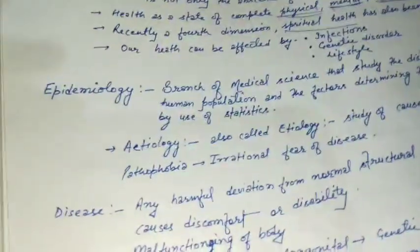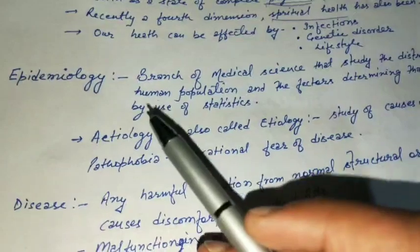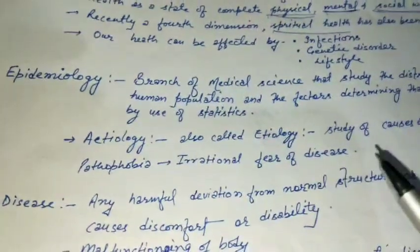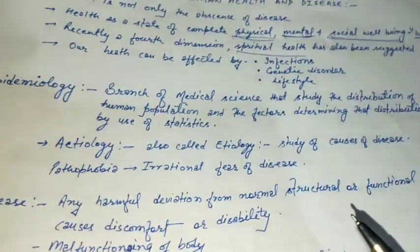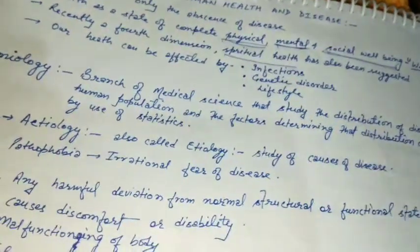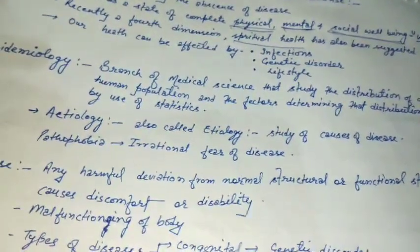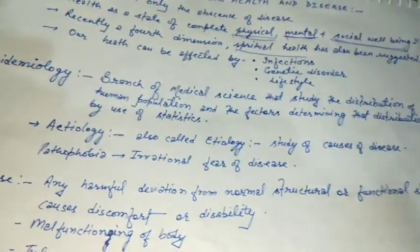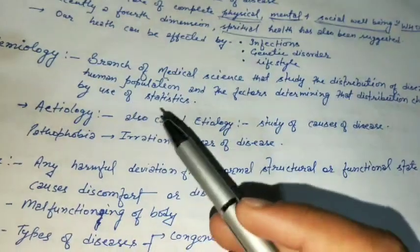Some particular terms are used in this topic. One such term is epidemiology. Epidemiology is basically a branch of medical science that studies the distribution of disease in human populations — how a particular disease is distributed within a human population. It also talks about the factors determining that distribution, chiefly by the use of statistics.